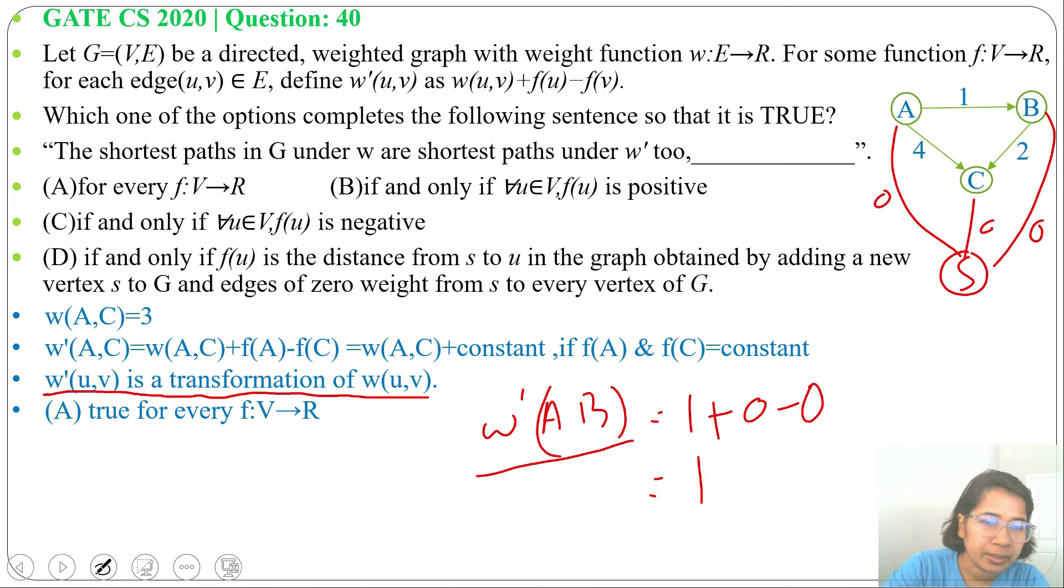This is true, but here if we mark, it's written if and only if. Due to this, option D will be false. If and only if the edge weights are 0, then it is true. No, if it will be constant also, it will be true.